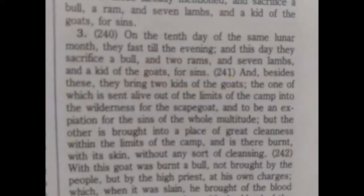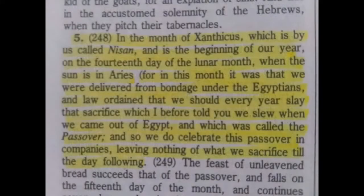Jumping to paragraph 3, it states: 'On the 10th day of the same lunar month, they fasted till the evening, and this day they sacrificed a bull and two rams and seven lambs, a kid of goats for sins.' Why did I bring this out? I'm showing you that they used a lunar system. Paragraph 5, book 3, chapter 10, page 96. So Josephus understood that we use the lunar system for our feast days. But what about our Sabbaths?